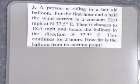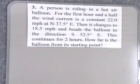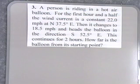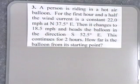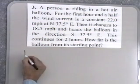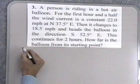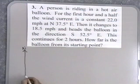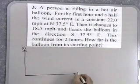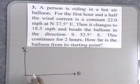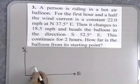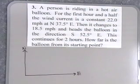Problem number three: a person is riding in a hot air balloon. The first hour and a half, the wind current is a constant 22.0 miles per hour at north 37.5 degrees east. Then the wind changes to 18.5 miles per hour and heads the balloon in the direction south 52.5 degrees east. This continues for two hours. How far is the balloon from the starting point? Let's begin with a north, south, west, east coordinate system. The balloon heads in the direction north 37.5 degrees east and travels at 22 miles per hour for an hour and a half.